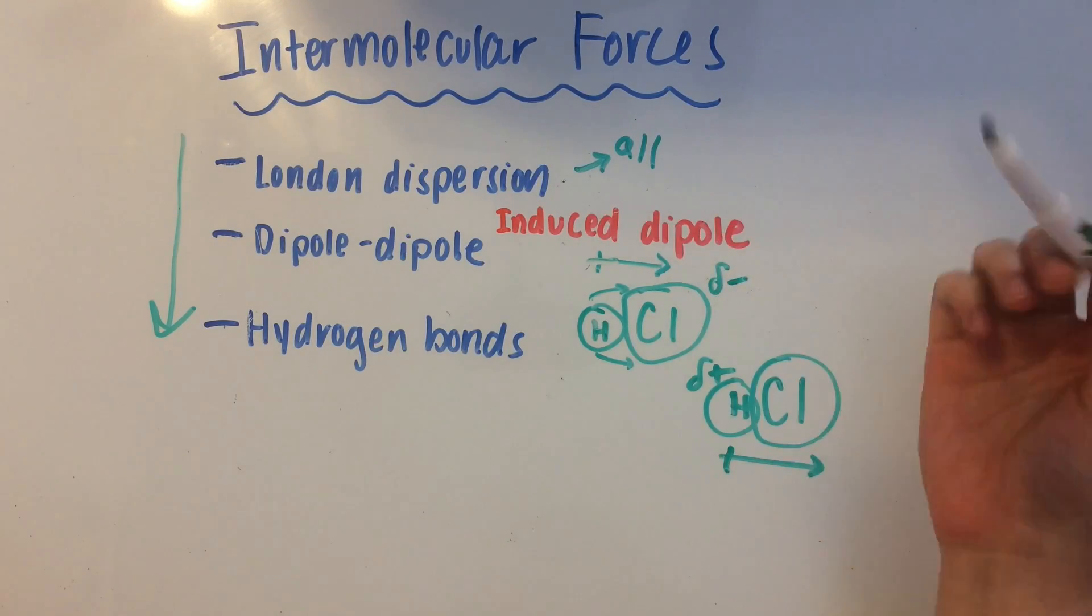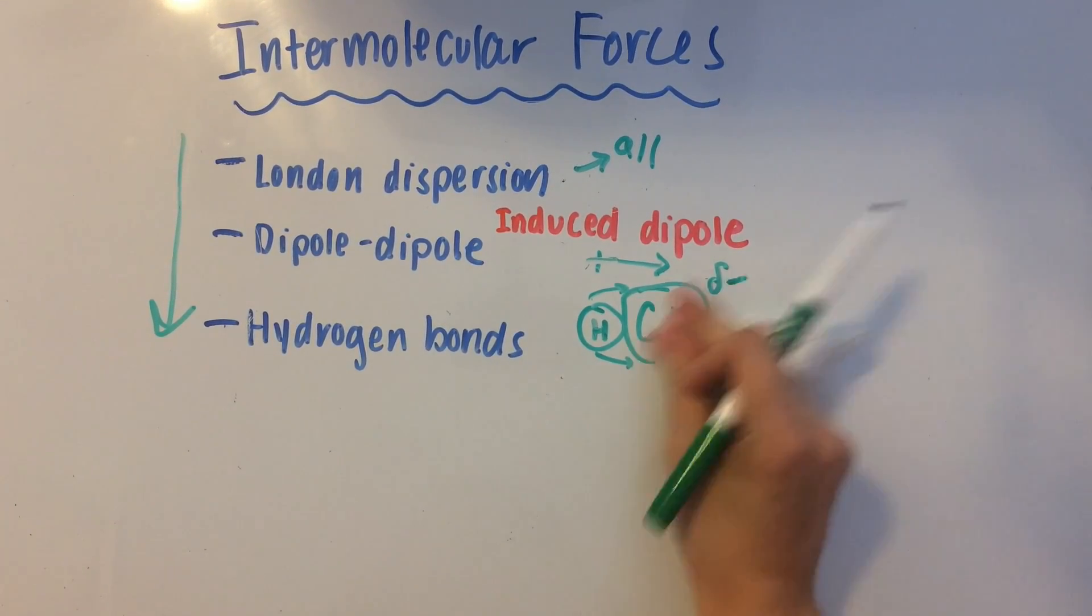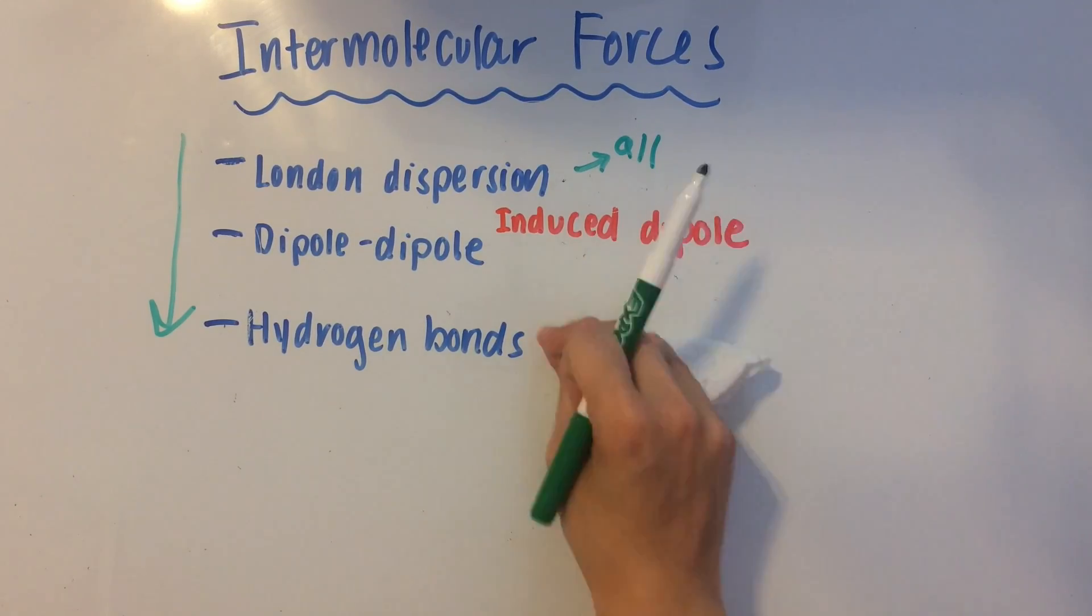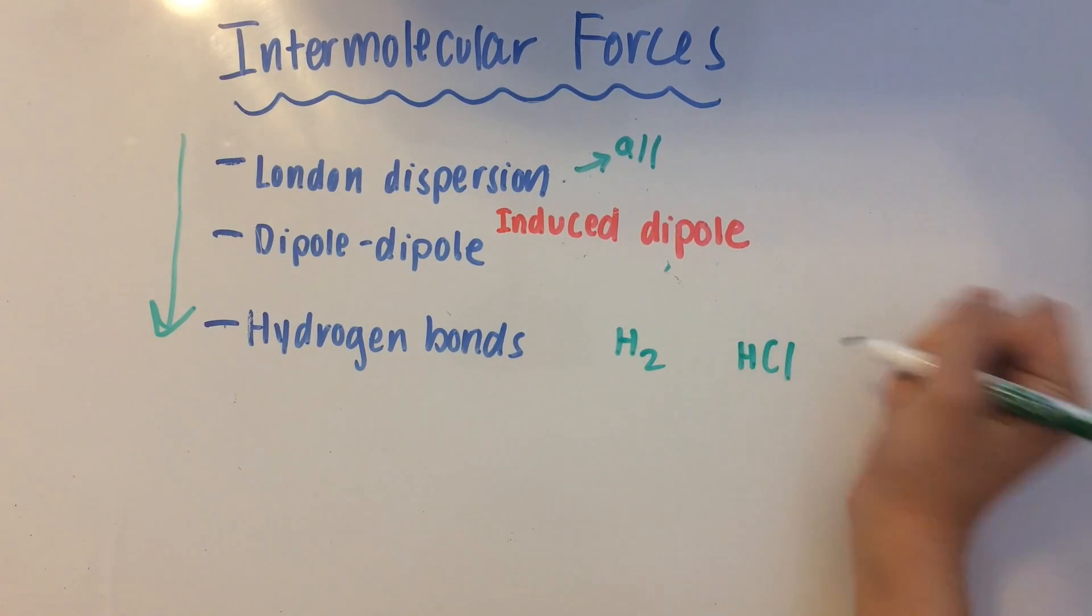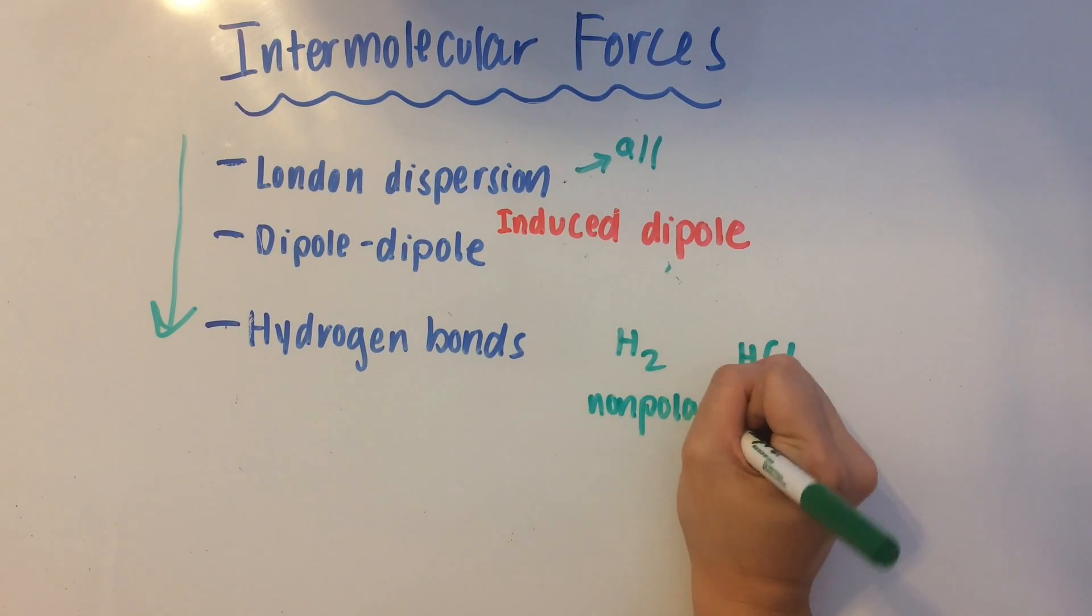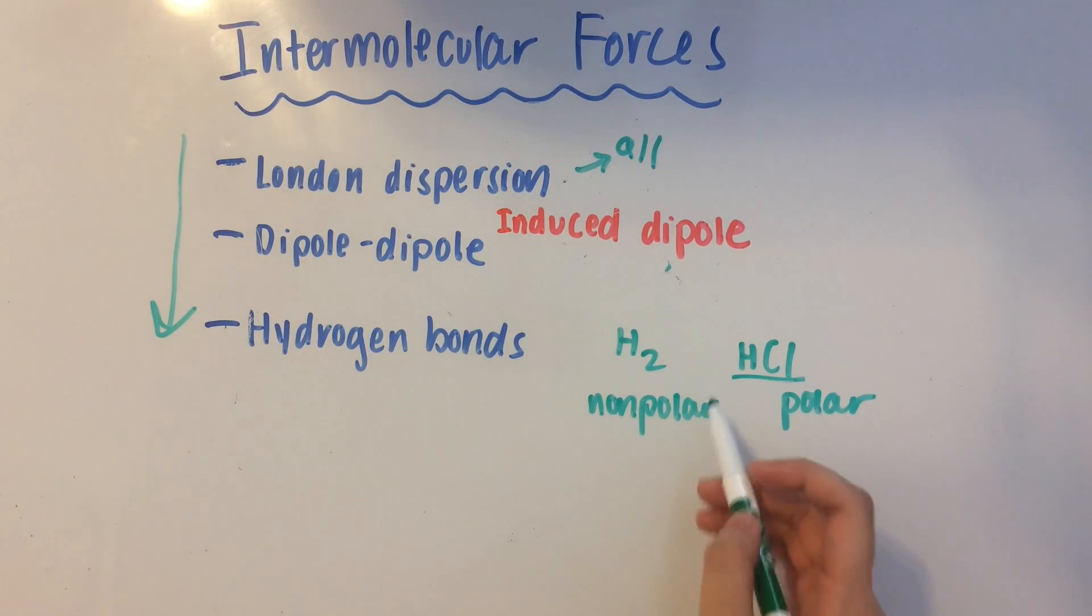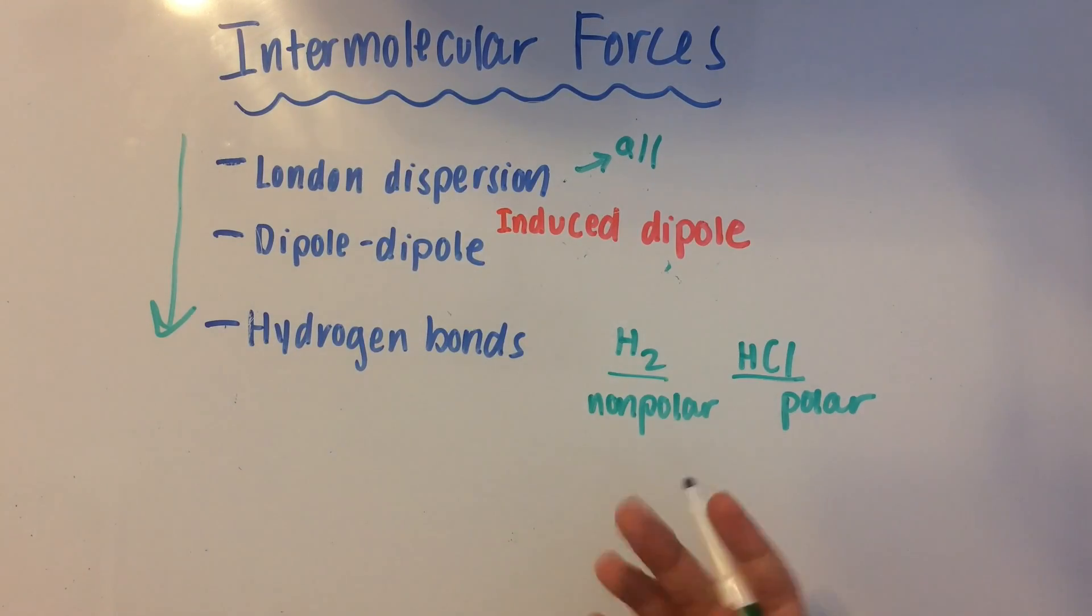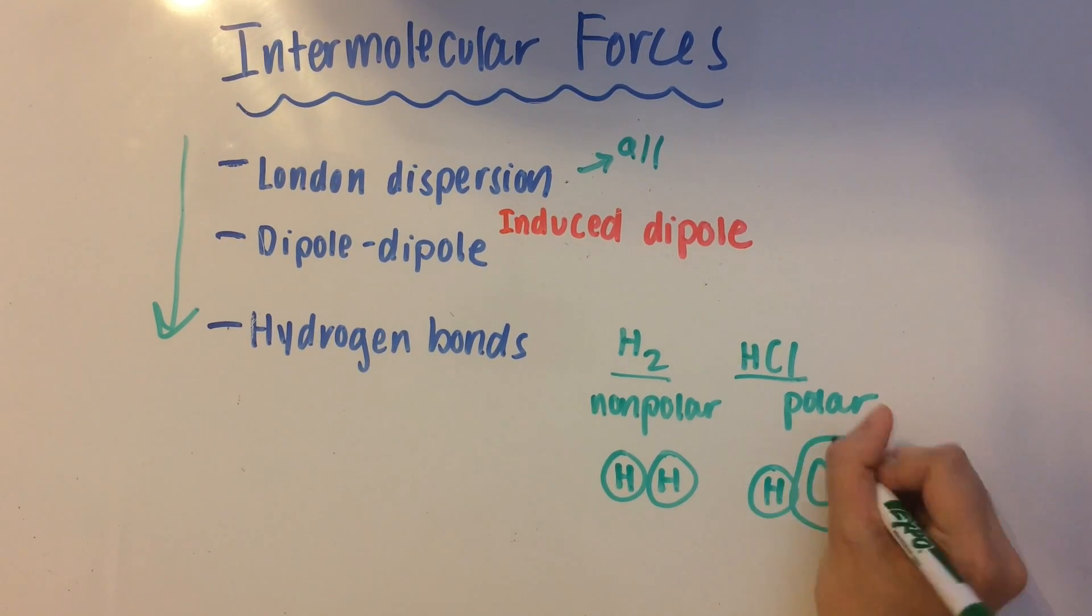Now here I've written induced dipole because they come in between London dispersion forces and dipole-dipole interactions. So let's go back to our old friend H2. And we can have another HCl molecule here. So H2 is non-polar, while HCl is polar. This is going to induce the H2 into a dipole, and I'll show you how that works. So H2 looks like this. HCl looks like this. We have the dipole for HCl.